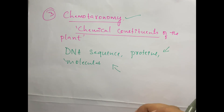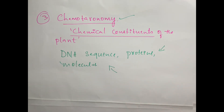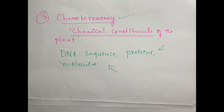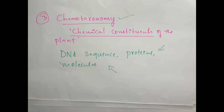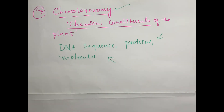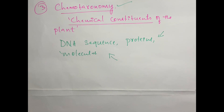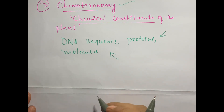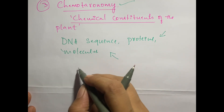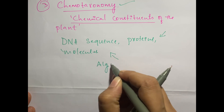So these are the branches of taxonomy as well as a few systems of classification. As I said, there are five groups in the plant kingdom, and the first one is algae. In the next class, we will take up algae.